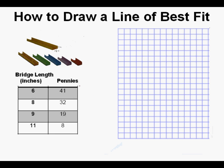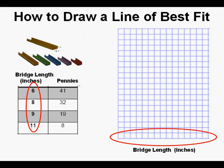We first label our independent quantity on the horizontal axis, and that is bridge length. We see that we go as high as 11 here on the input data and see that we have 15 squares available here on the horizontal axis to work with.